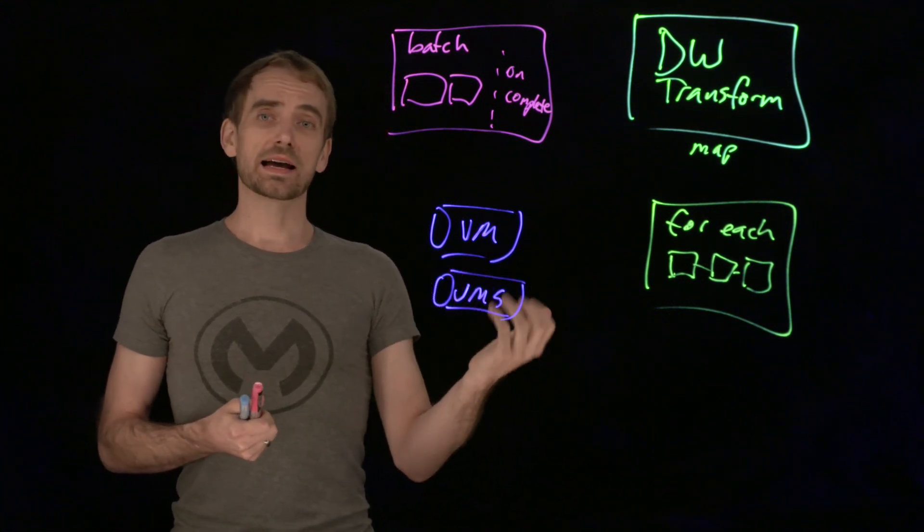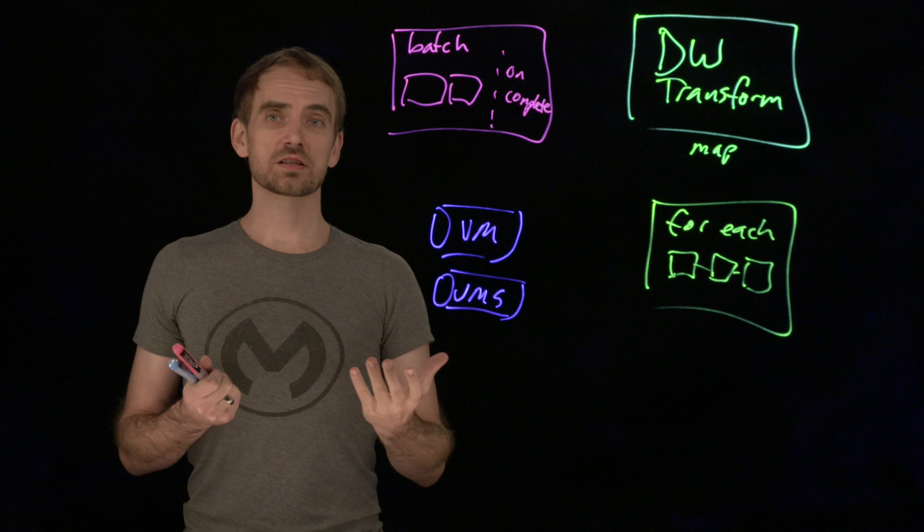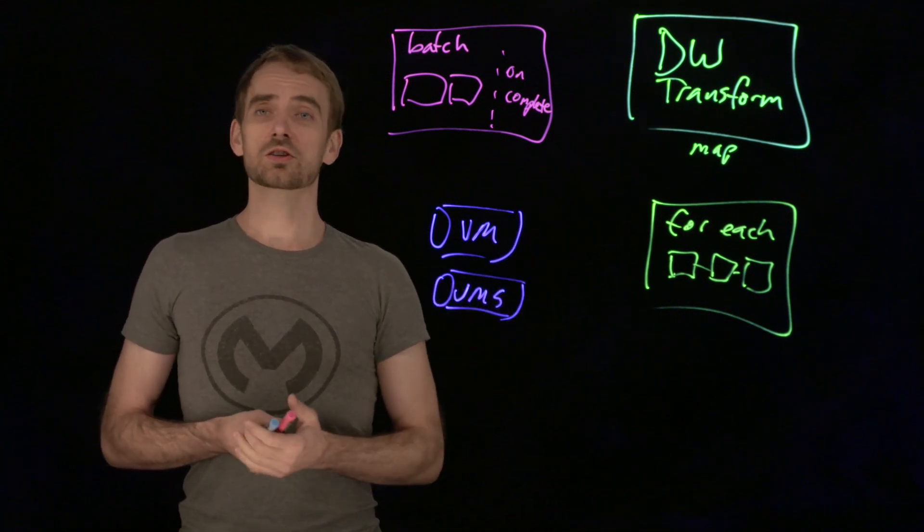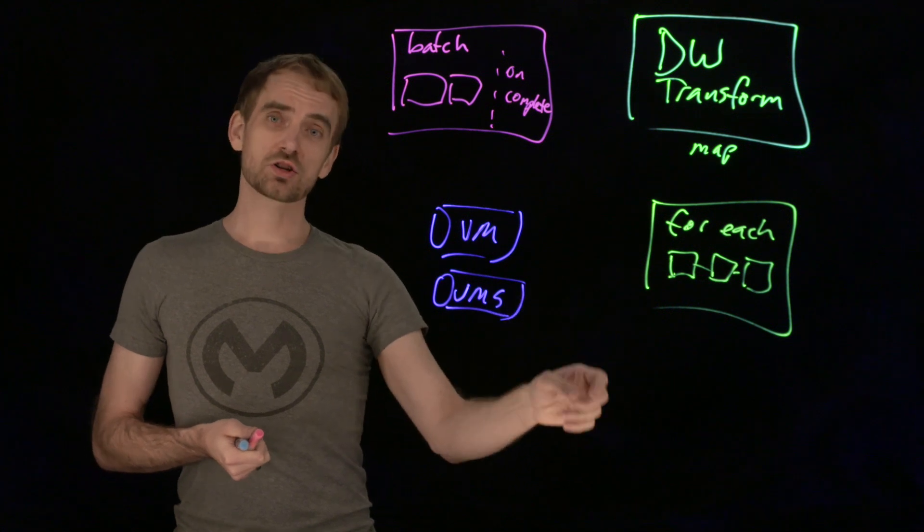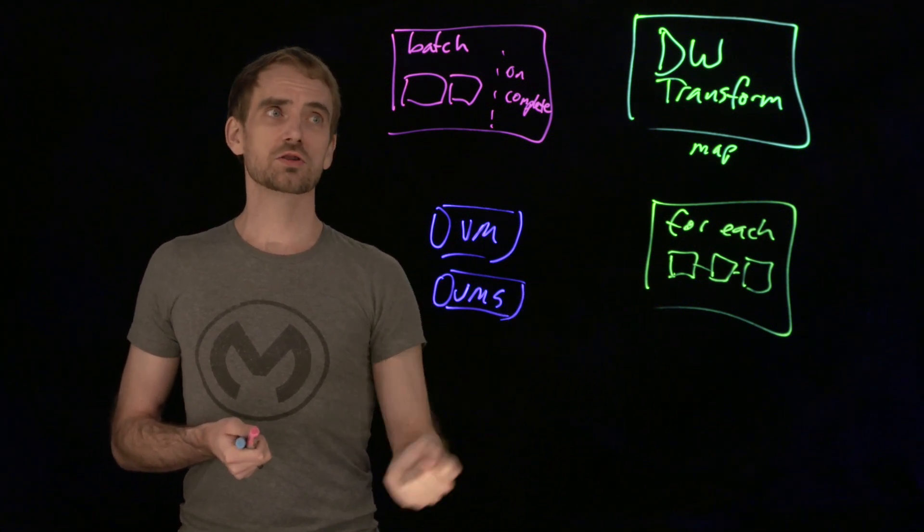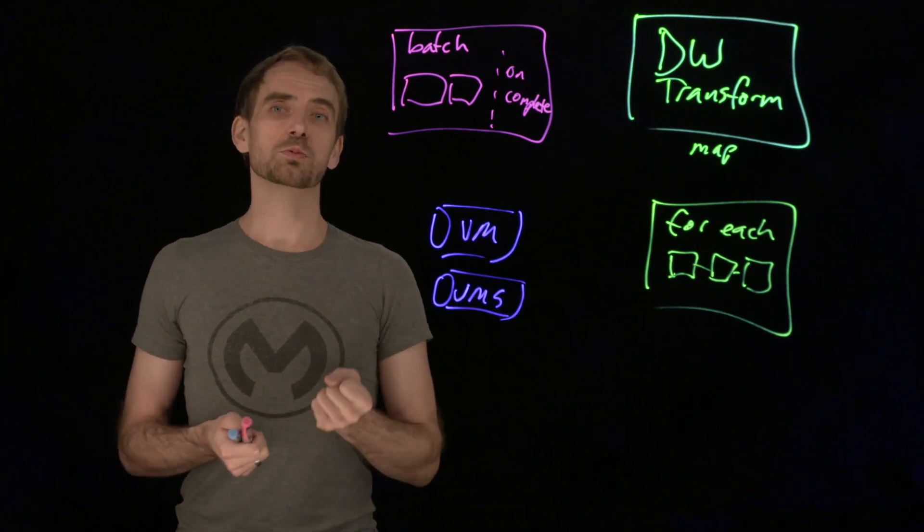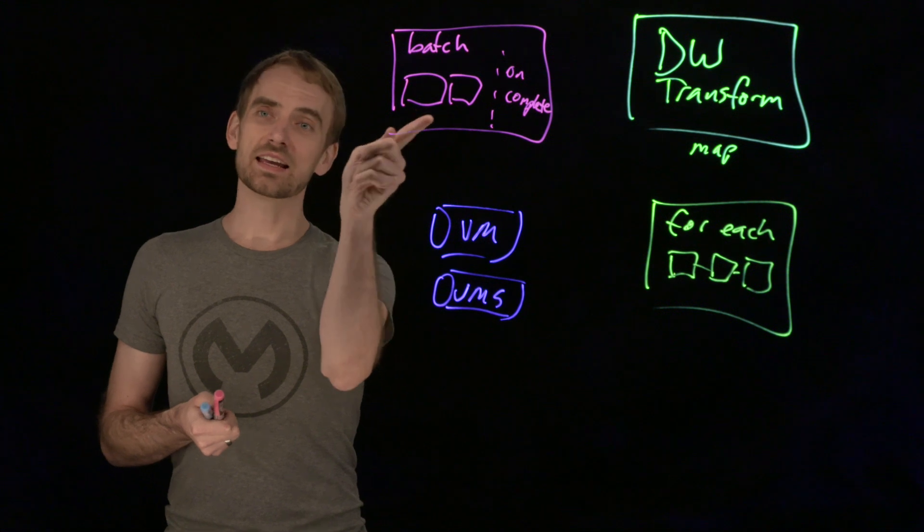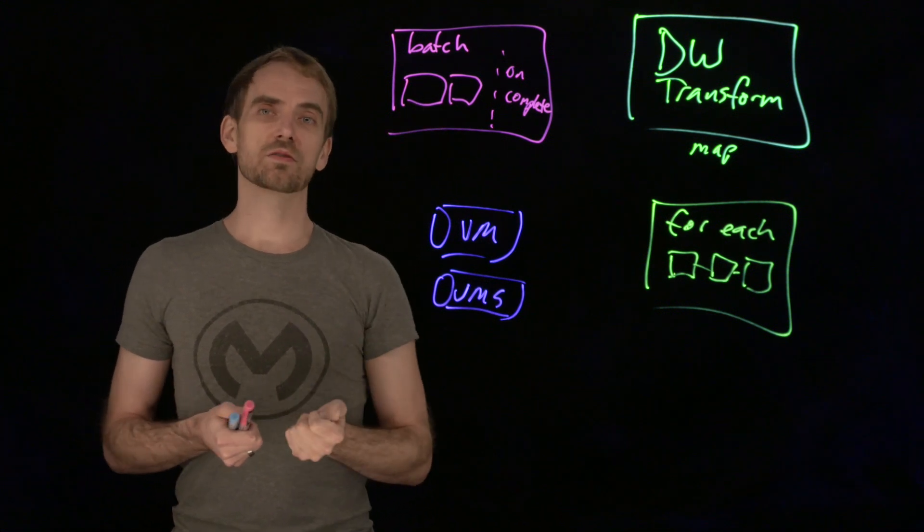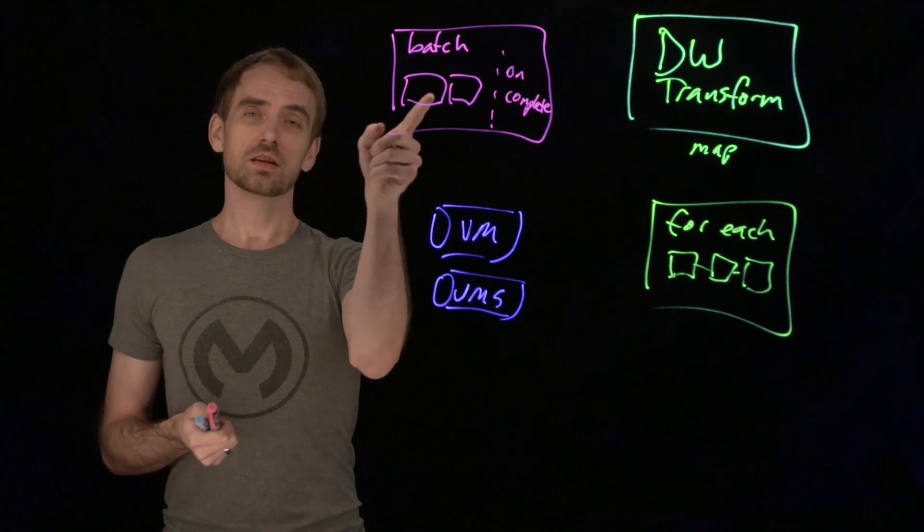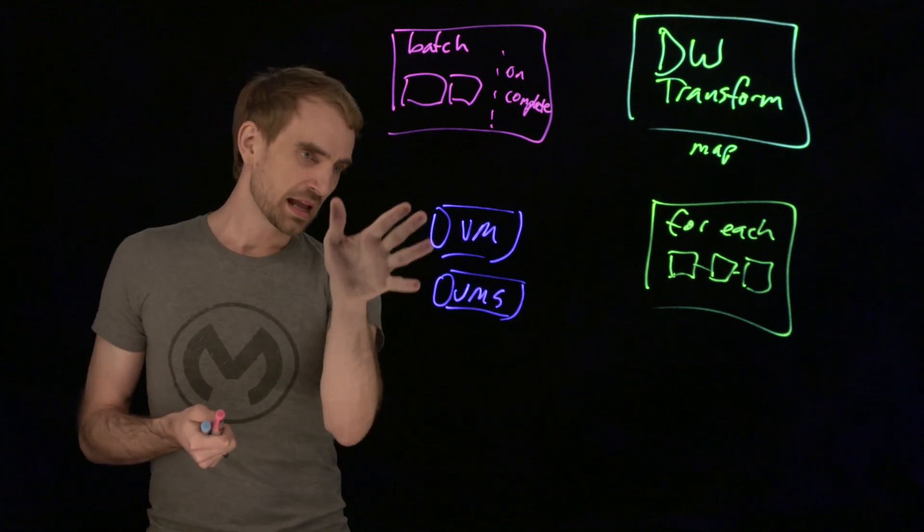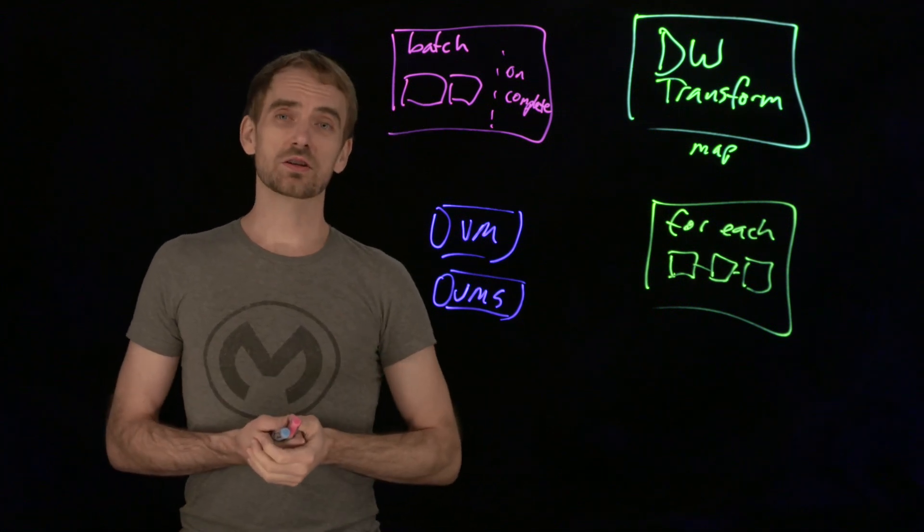And those are our four options for processing lots of records. When you just need to do structure, just consider data weave. When you need to loop over sequentially with a single thread, for each. When you need to throw multiple threads at the problem and take each through a series of steps, with also the option like for each to do bulk operations, because you can do your batch aggregator. And final one is to use queuing.